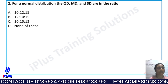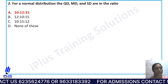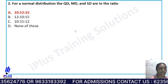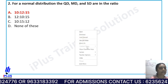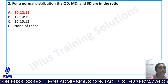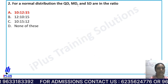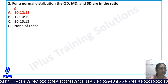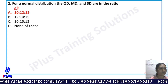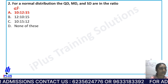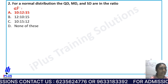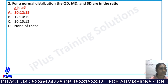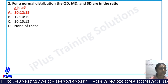The right answer here is Option A. Quartile deviation, mean deviation, and standard deviation are in the ratio — quartile deviation : mean deviation : standard deviation = 10 : 12 : 15.